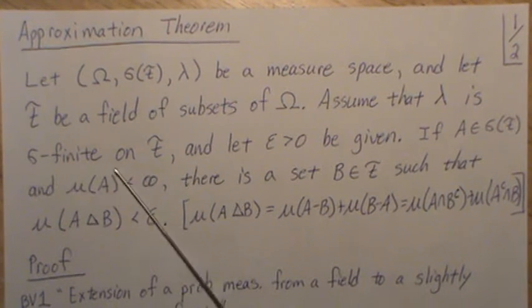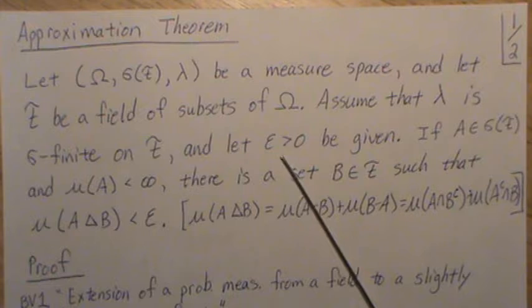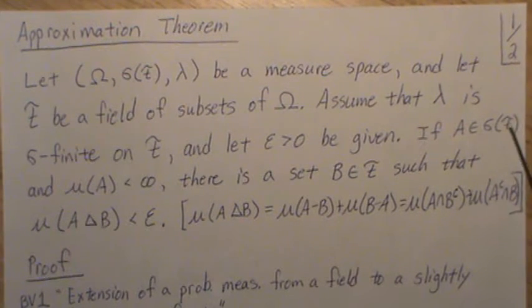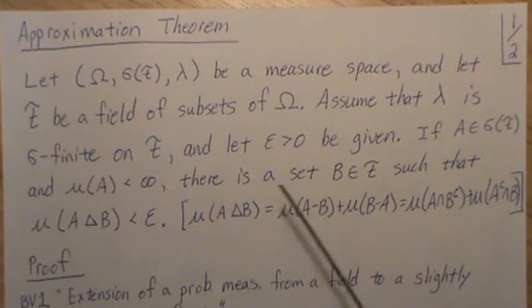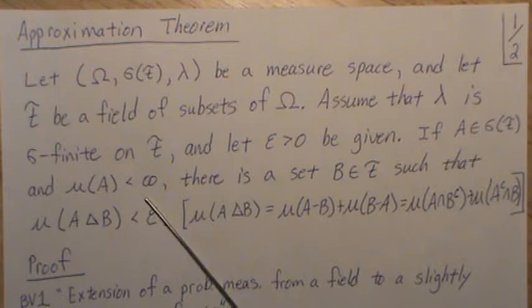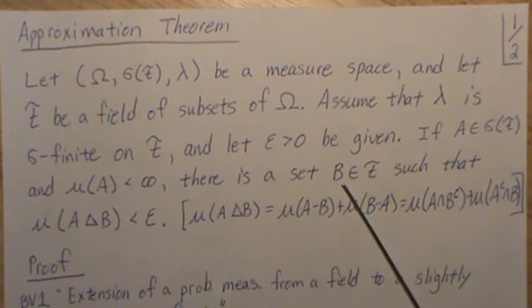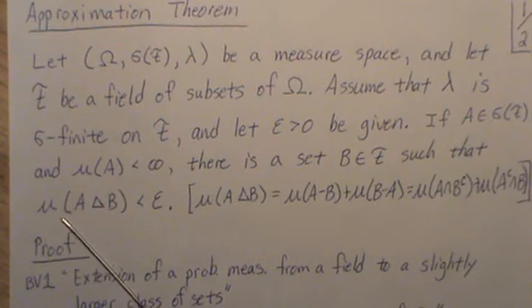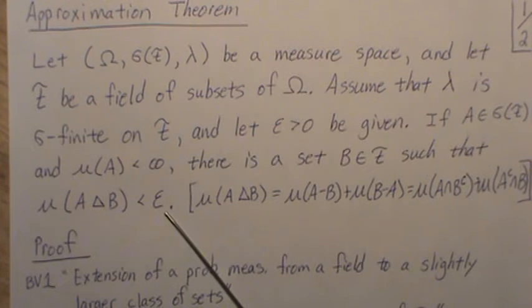Assume that λ is sigma finite on F, and let ε > 0 be given. If A is any set in the sigma field and the measure of that set is finite, there's a set B in the field such that the symmetric difference is less than ε.